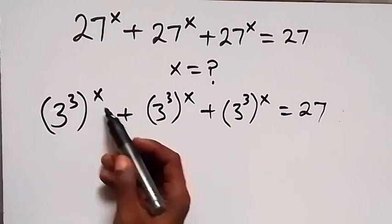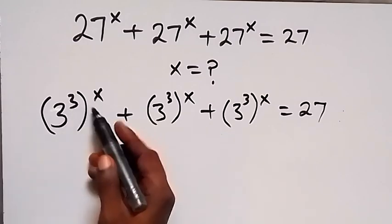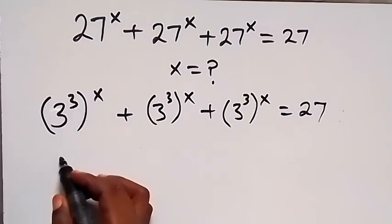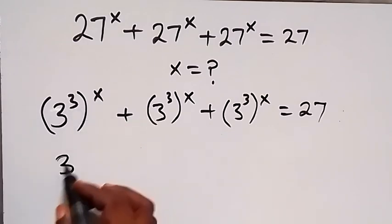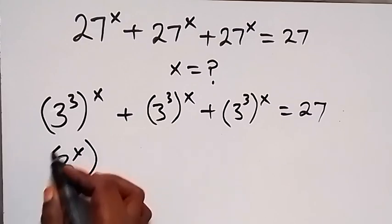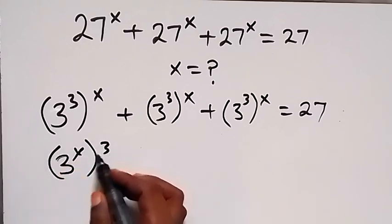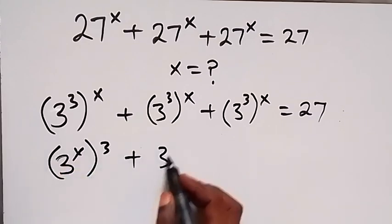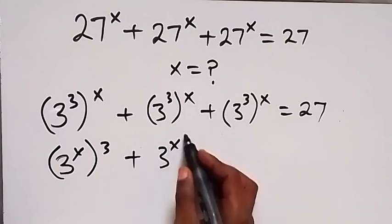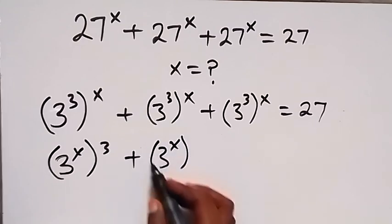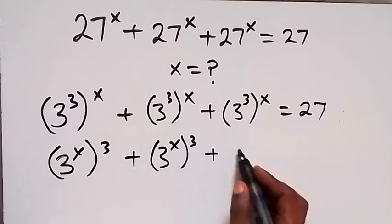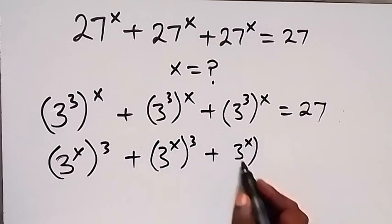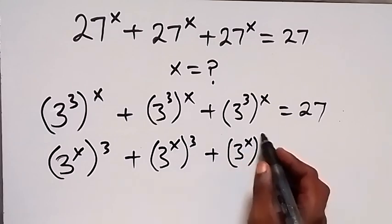From the law of indices, this power here can be interchanged since they multiply. We now have 3 raised to power x, then raised to power 3, plus 3 raised to power x raised to power 3, plus 3 raised to power x raised to power 3.